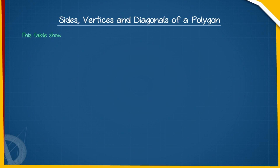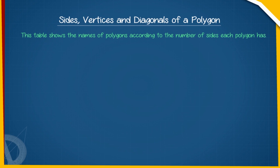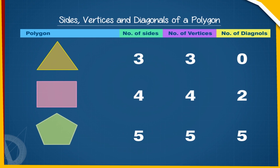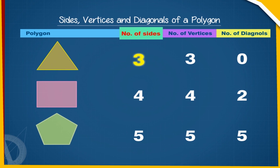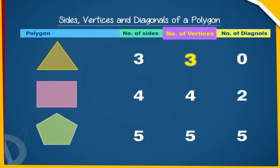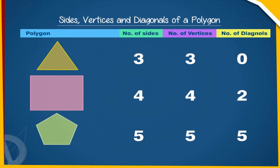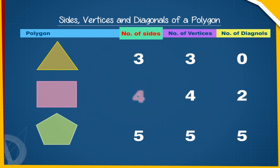This table shows the names of polygons according to the number of sides each polygon has — with columns for number of sides, number of vertices, and number of diagonals. A triangle has 3 sides, 3 vertices, and 0 diagonals. A quadrilateral has 4 sides, 4 vertices, and 2 diagonals.